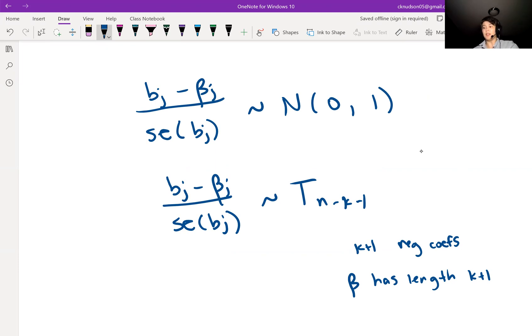Using this, then we can go ahead and do things like hypothesis test for BJ, or we can make a confidence interval for beta J. So if we want to do a Wald test.